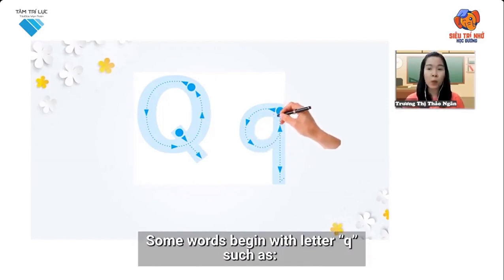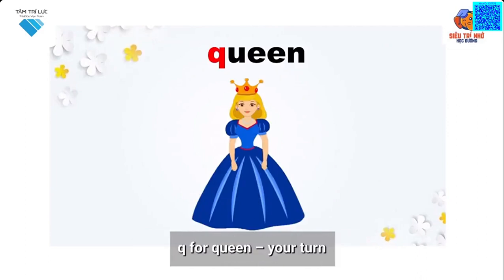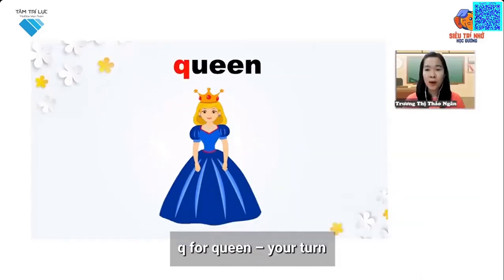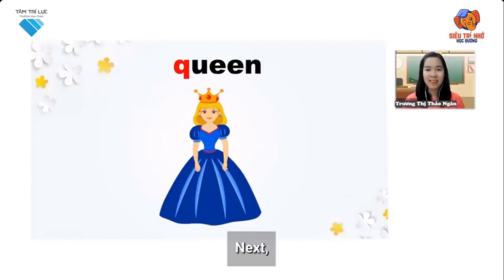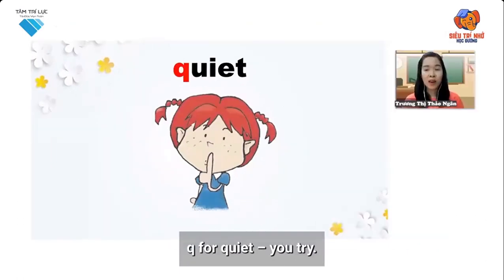Some words begin with Q, such as: Qu — queen. Qu for queen. Your turn. Next: Qu — quiet. Qu for quiet. You try.